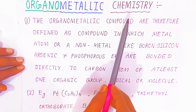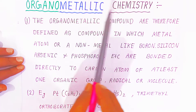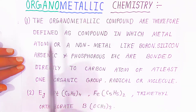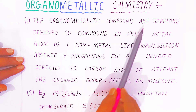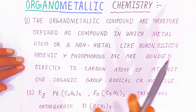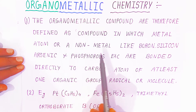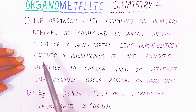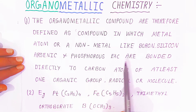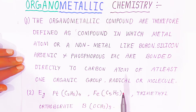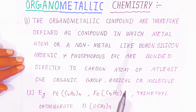In organometallic chemistry, the chemistry which deals with organometallic compounds is called organometallic chemistry. The organometallic compounds are defined as compounds in which metal atoms or non-metals like boron, silicon, arsenic, phosphorus, etc. are bonded directly to the carbon atom of at least one organic group, radical, or molecule.